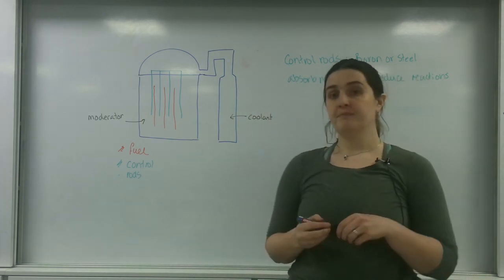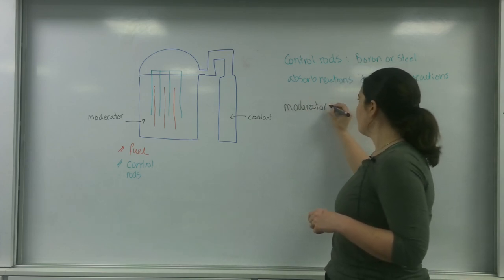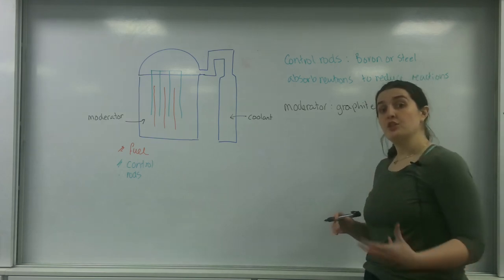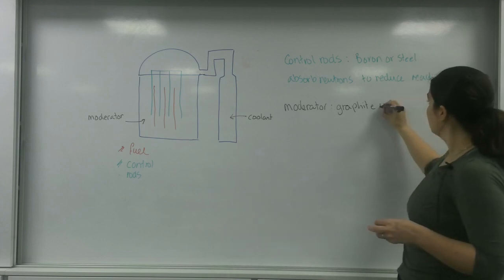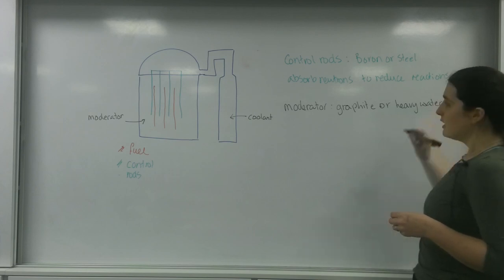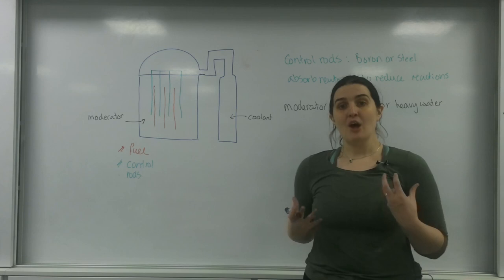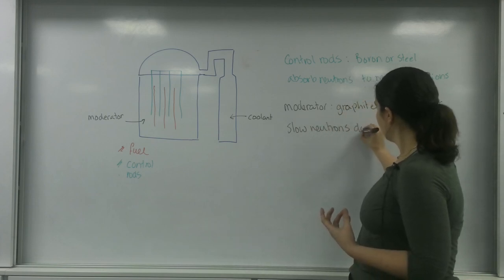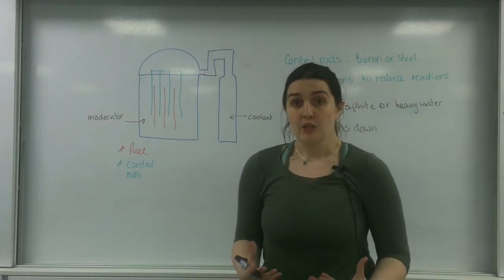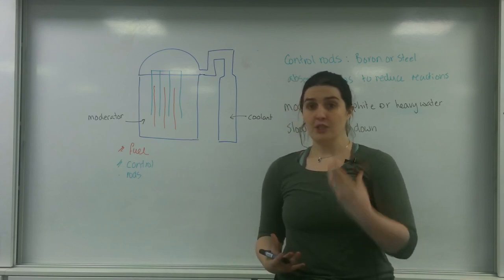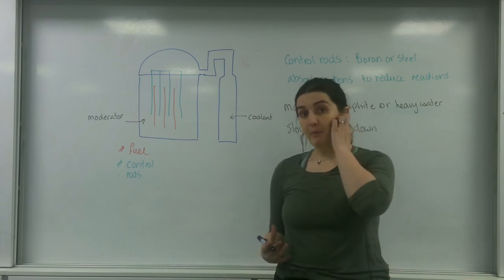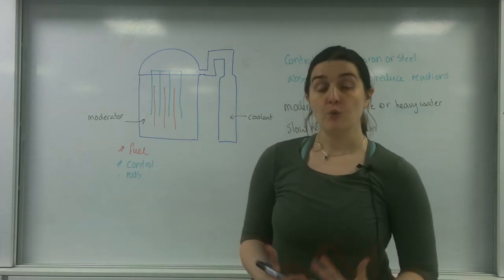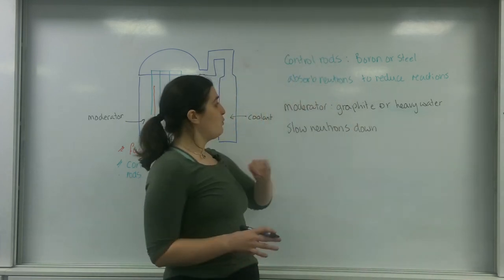Now the moderator can be graphite or sometimes heavy water, and the reason you use heavy water is because you can also use that as a coolant as well. Its job is to act more like a viscous fluid. The whole job of it is to slow the neutrons down. You're slowing these neutrons or these daughter nuclei down so when they do hit another element they haven't got as much kinetic energy, so it will slow down the decay rate. Also by slowing them down, the time it will take to reach another one to cause decay or nuclear fission would also decrease. You are slowing the rate of reaction down.